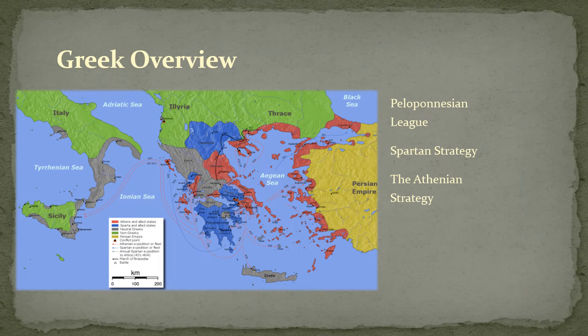Their strategy was really to wait it out. They knew the Spartans couldn't stay for very long, that they had plenty of money and could feed themselves, so they went for the long game. Meanwhile, while Sparta came north to fight Athens, they would send their navy out to harass the Peloponnese — which would be left unguarded — to try to stir up helot slave rebellion among the Spartans, and to wait for Sparta to give up.